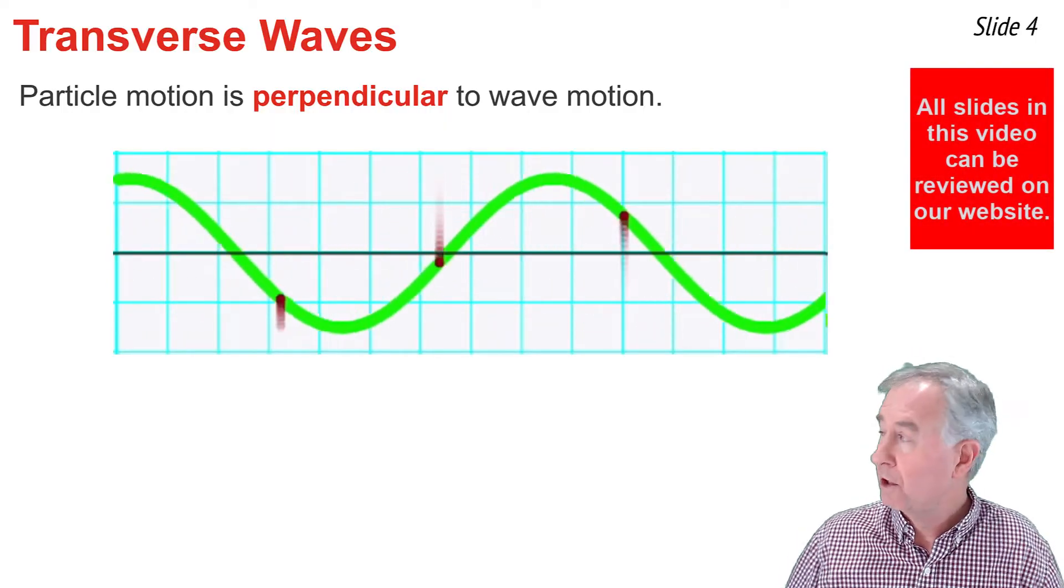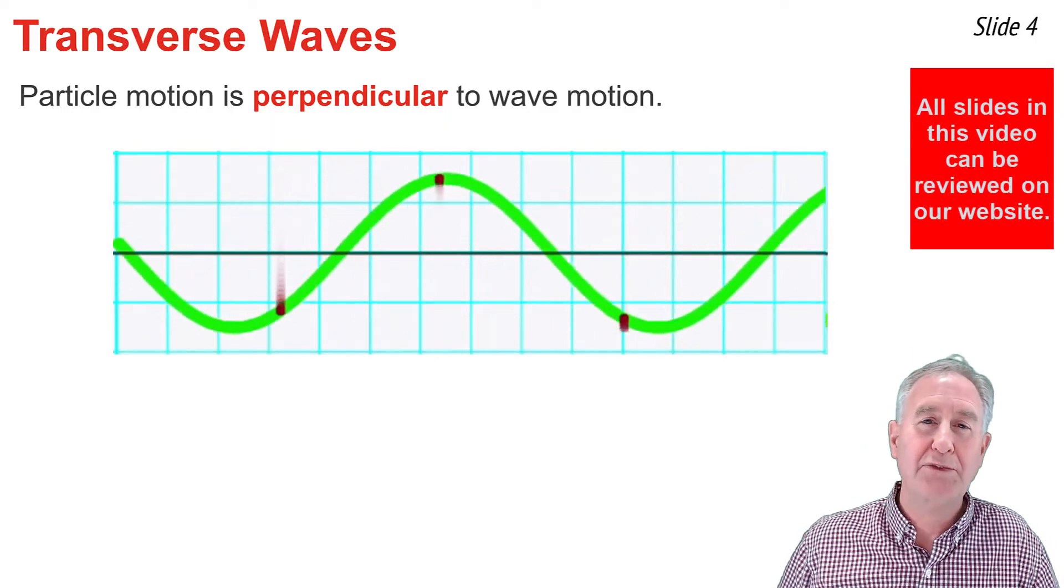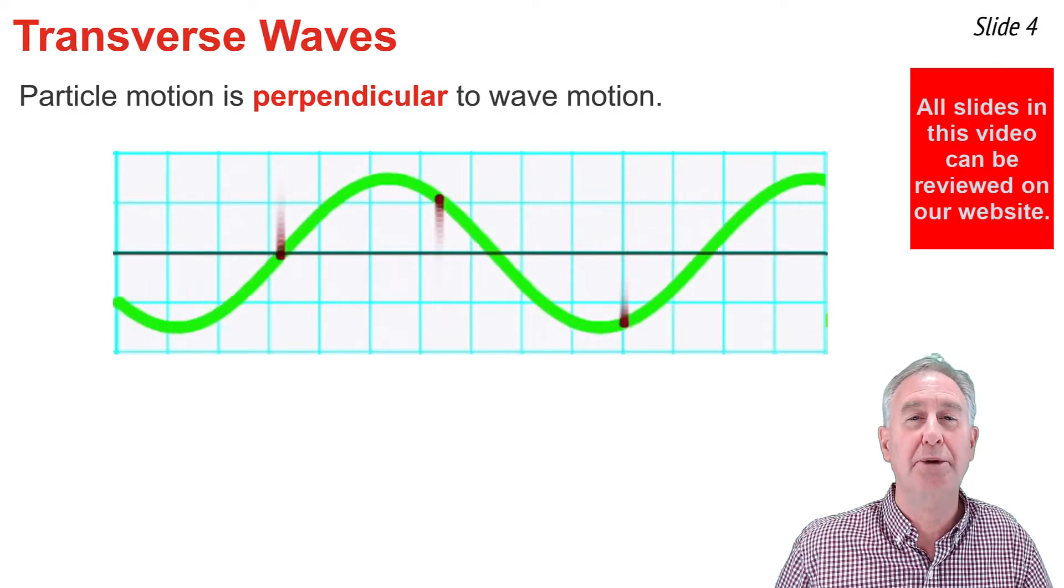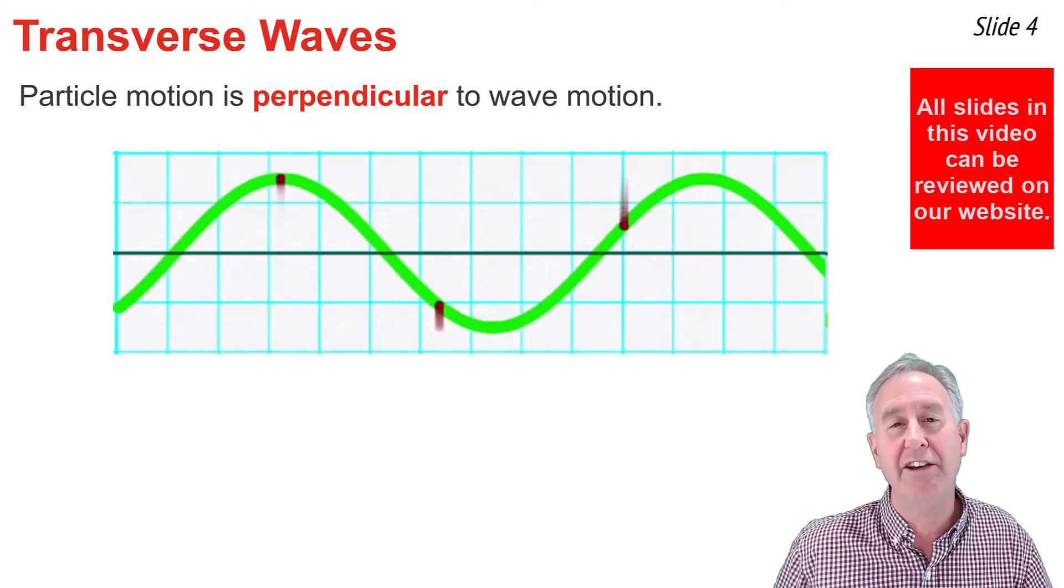One category of waves is a transverse wave. When a transverse wave exists within a medium, the particles of the medium vibrate in a direction that is perpendicular to the direction that the wave moves.